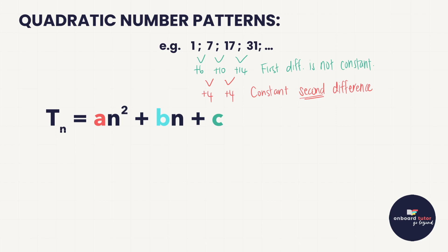The first formula to remember is that 2a equals the constant second difference. For our pattern, the constant second difference is 4, so 2a = 4. Dividing both sides by 2, we get a = 2.